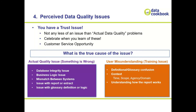So those are the four kinds of issues: database integrity, business logic, mismatch between systems, and perceived issues that might turn out to be a report problem, a definition problem, or a training issue. All of which, however, represent a loss of trust.